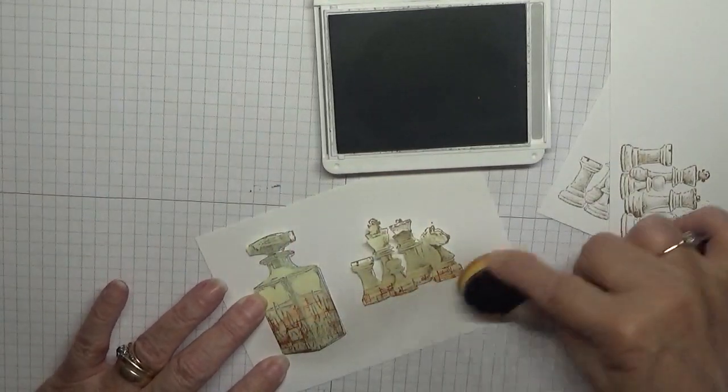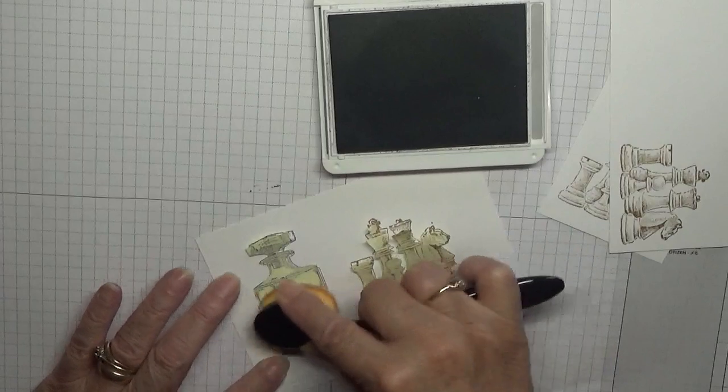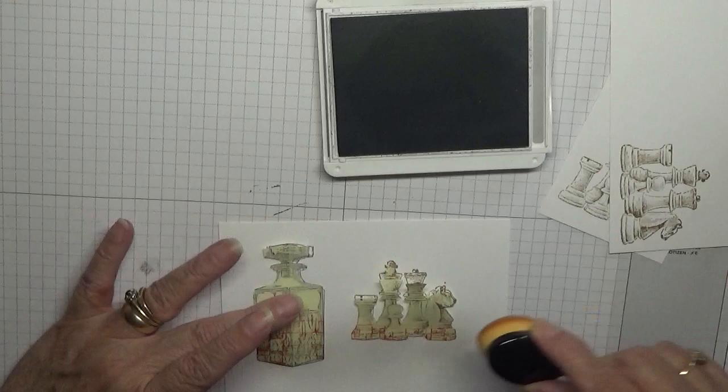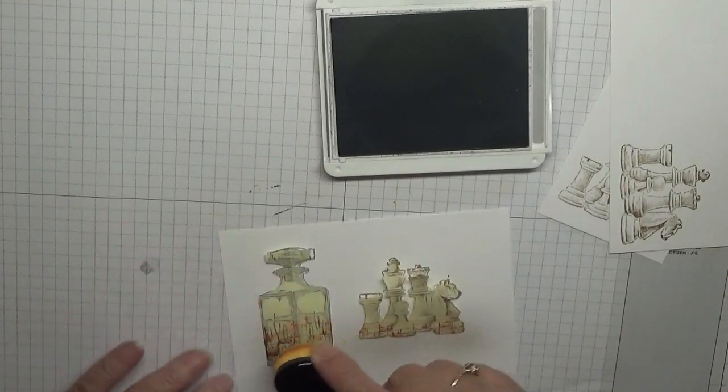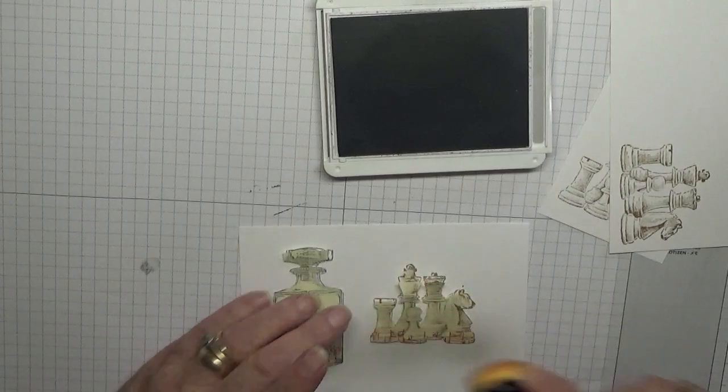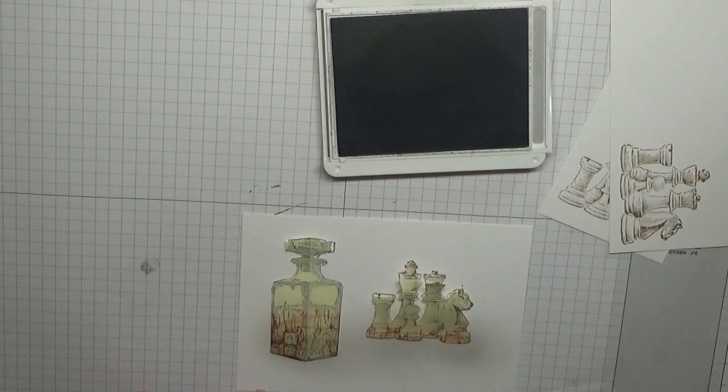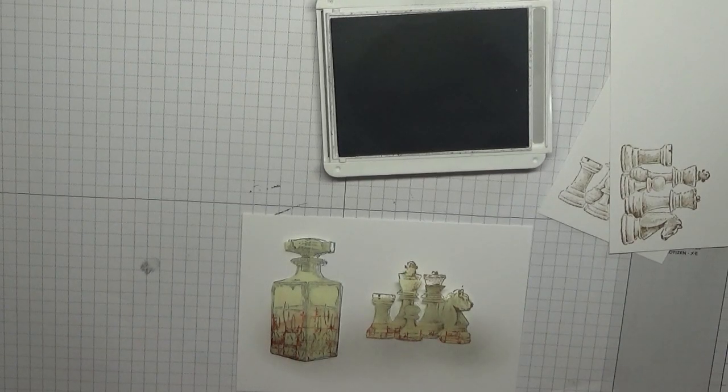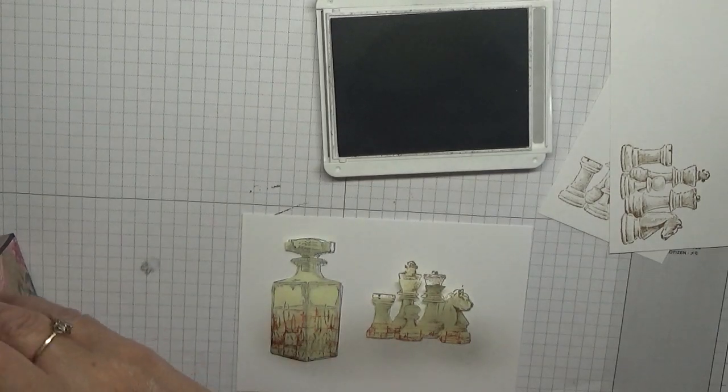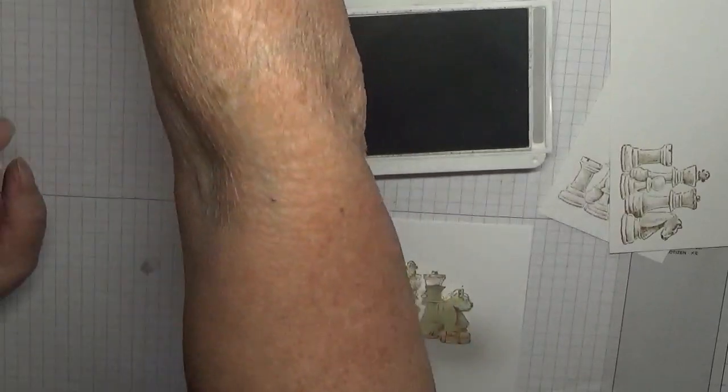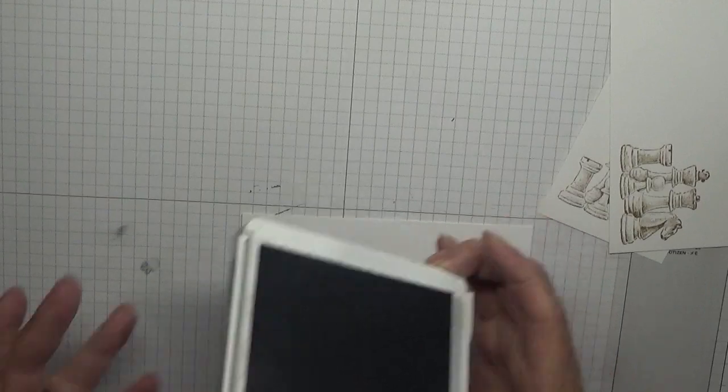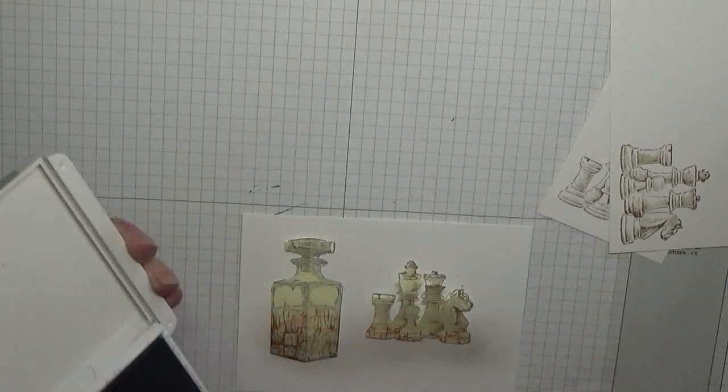Just gently put some gray ink along the bottom and halfway up the chess pieces. I don't know the names of chess pieces, I don't play chess. I do know there's a pawn and a knight, I think that's all I know.